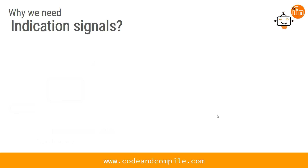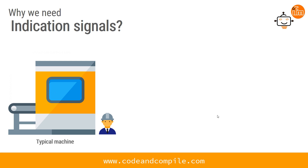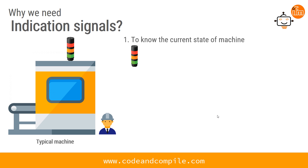Let's consider an example: we have a machine with an operator, and this machine has sensors inside it which are programmed to alert the operator in case of warnings, machine states, or emergency situations. Let's see typically why we need indication signals.